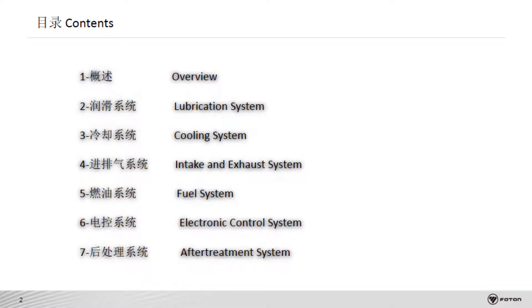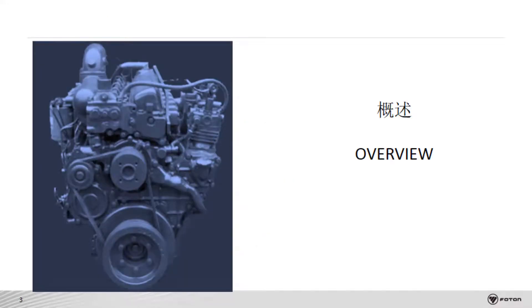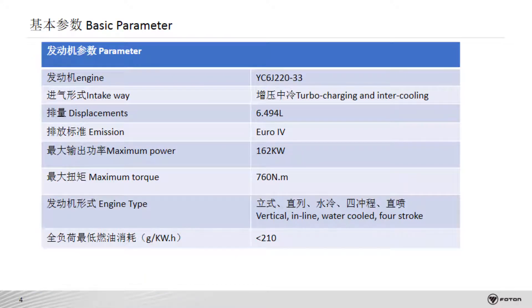First, we will talk about the overview, then the lubrication system, cooling system, intake and exhaust system, fuel system, and electronic control system. At the last, the after-treatment system. First, let's look at the basic parameters of the engine. The engine displacement, power, and minimum fuel consumption at full load are the main parameters.